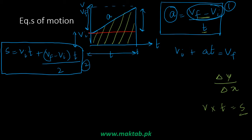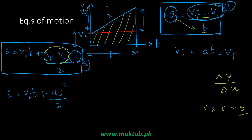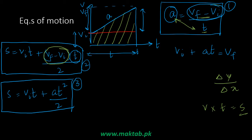VF minus VI equals A times T from the first equation. Substituting this into the displacement equation, S equals VI·t plus (1/2)·a·t². This is our third equation of motion, used when final velocity is not available. We can also write S equals (VF plus VI) divided by 2, multiplied by t — this is equation number 2 in a derived form.